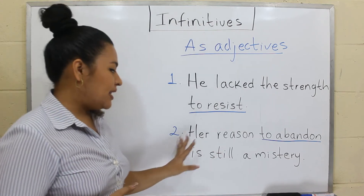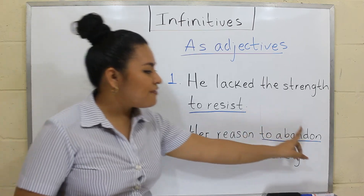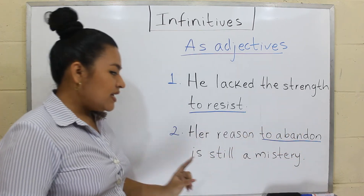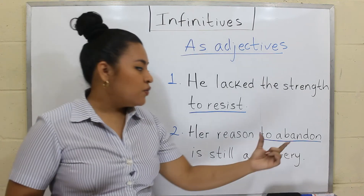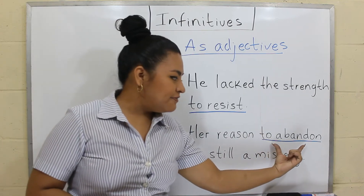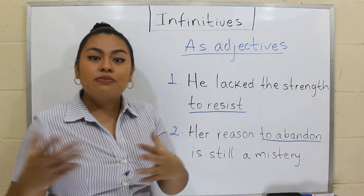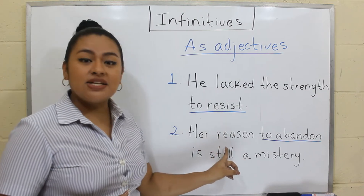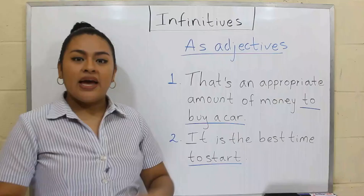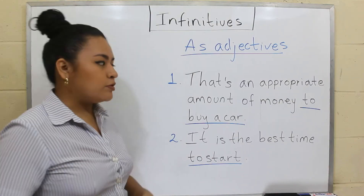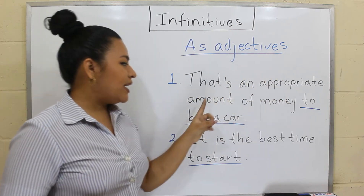In the next sentence: 'A reason to abandon is still a mystery.' In this case, we have the infinitive 'to abandon,' which is giving more information about the noun 'reason.'